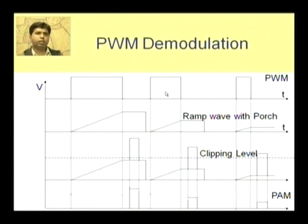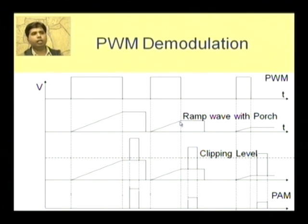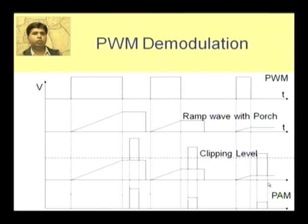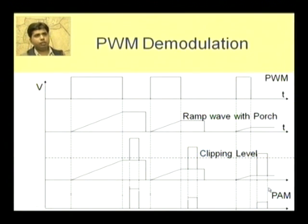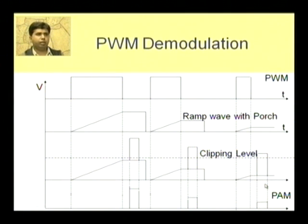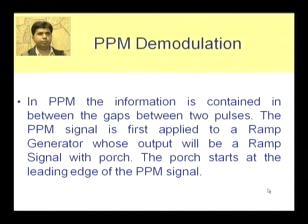This remaining portion is actually a pulse amplitude modulated signal. In this way we have converted a pulse width modulated signal — by using a ramp generator, an adder, and a clipper — to a pulse amplitude modulated signal. This PAM signal can then be converted back to the modulating signal by using a holding circuit and low pass filter.